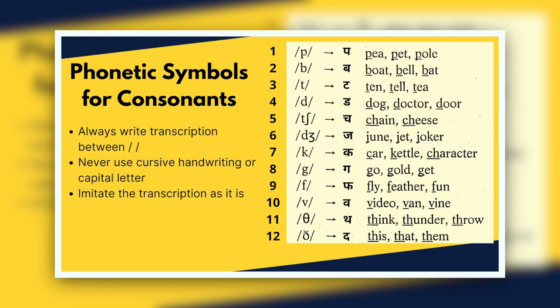Some students say 'feather' — you have to know that the R sound is silent, so you call it 'feather,' not 'feather.' The tenth is V, as in video, van, wine. The eleventh is TH (voiceless), as in think, thunder, throw. The twelfth is TH (voiced), as in this, that, them. Let's do a quick revision from one to twelve: P, B, T, D, CH, J, K, G, F, V, TH, DH.